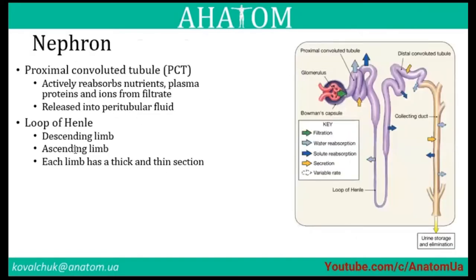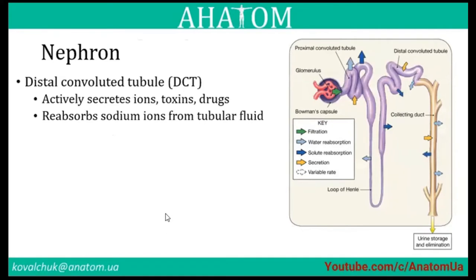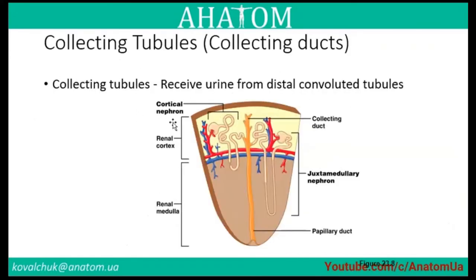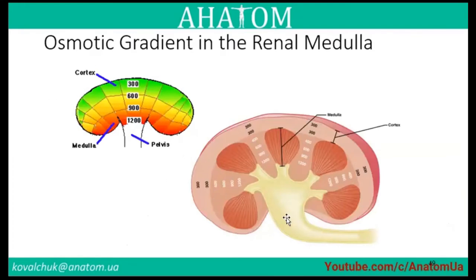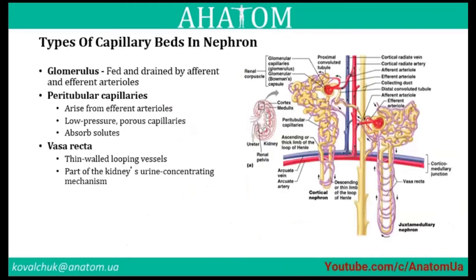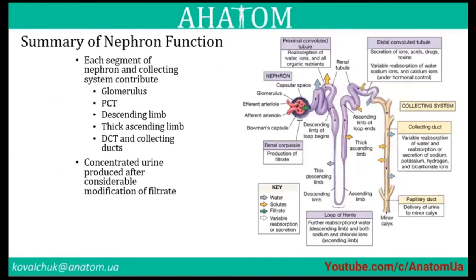The nephron has a proximal convoluted tubule, loop of Henle, and distal convoluted tubule, which actively secretes toxins and drugs and reabsorbs sodium ions from tubular fluid. Collectively, collecting tubules receive fluid from the distal convoluted tubules. Osmotic gradients of the renal medulla differ from the cortex. Types of capillary beds in the nephron include glomerular capillaries and vasa recta, important for understanding physiological processes in the kidney.